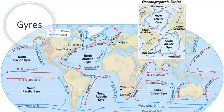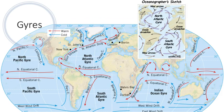Our oceans are constantly moving. Along the shore, we see the movement as waves that break roughly perpendicular to the beach. One may also notice movement parallel to the shore called longshore drift. Less obvious, though, are global-scale currents of ocean water called gyres. Gyres are very important for transporting heat from the equator towards the poles and for redistributing nutrients throughout the world's oceans.